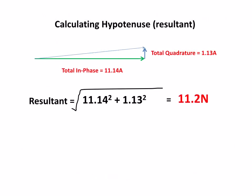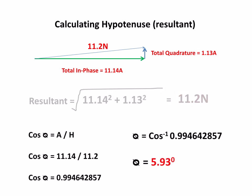We can find the resultant using Pythagoras. We square both sides, add them together, take the square root, gives me 11.2. We can find the angle using cosine, adjacent over hypotenuse. 11.14 divided by 11.2 gives me 0.9946. If we do the inverse cosine of that, we get 5.93 degrees. So a very shallow angle.